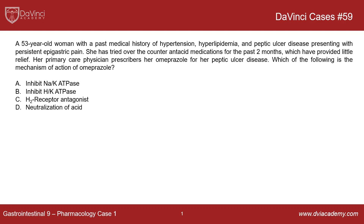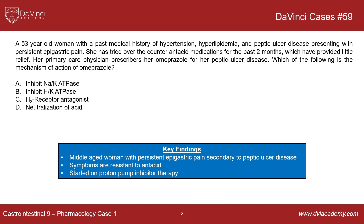The question is: which of the following is the mechanism of action of omeprazole? There are a series of answer choices with different mechanisms of action. Even though this is a pharmacology case and the stems are often short, it's good to put together what the question is getting at. This is a middle-aged woman with persistent epigastric pain, most likely secondary to peptic ulcer disease, whose symptoms are resistant to antacid therapy. So she's being started on a proton pump inhibitor, which is omeprazole.